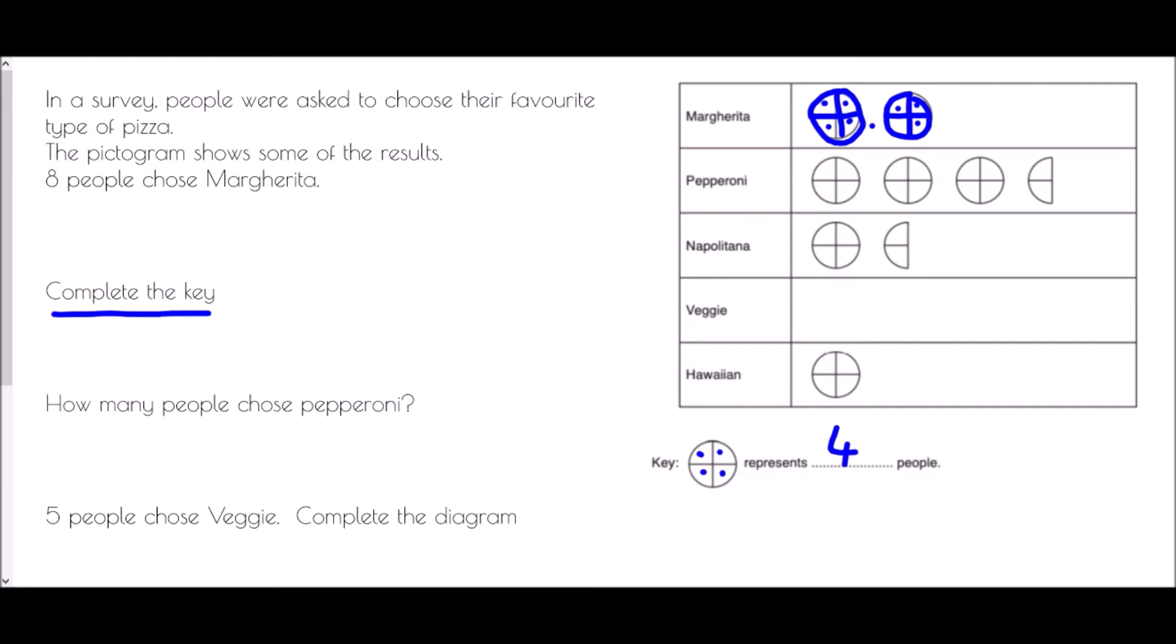And so then we're asked how many people chose pepperoni. Well we can do this just by looking at how many slices we've got. We can take it in whole groups. So there's four and another four, four and another four. But then when we get to the very end this is only half of a pizza. Now a full pizza was four people, and so this piece is two people. So four plus four plus four is twelve, plus another two. Well that must mean fourteen people chose pepperoni.